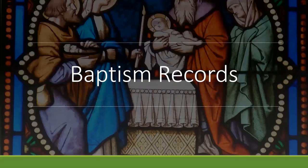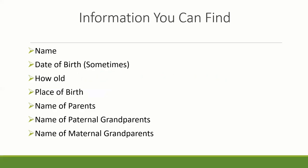The first record type we're going to look at is baptismal records. This is the information that you can find: the name, date of birth sometimes, how old, place of birth, name of parents, name of paternal grandparents, name of maternal grandparents. But not all the time — some records do, and we're going to look at some of those records throughout the centuries.